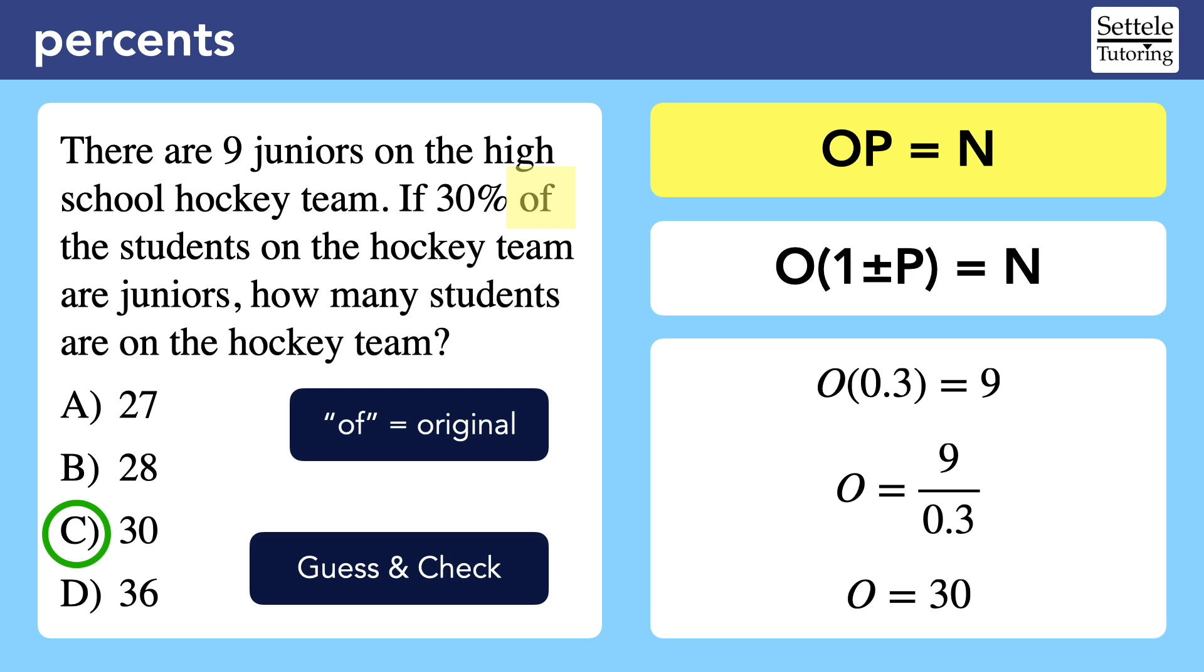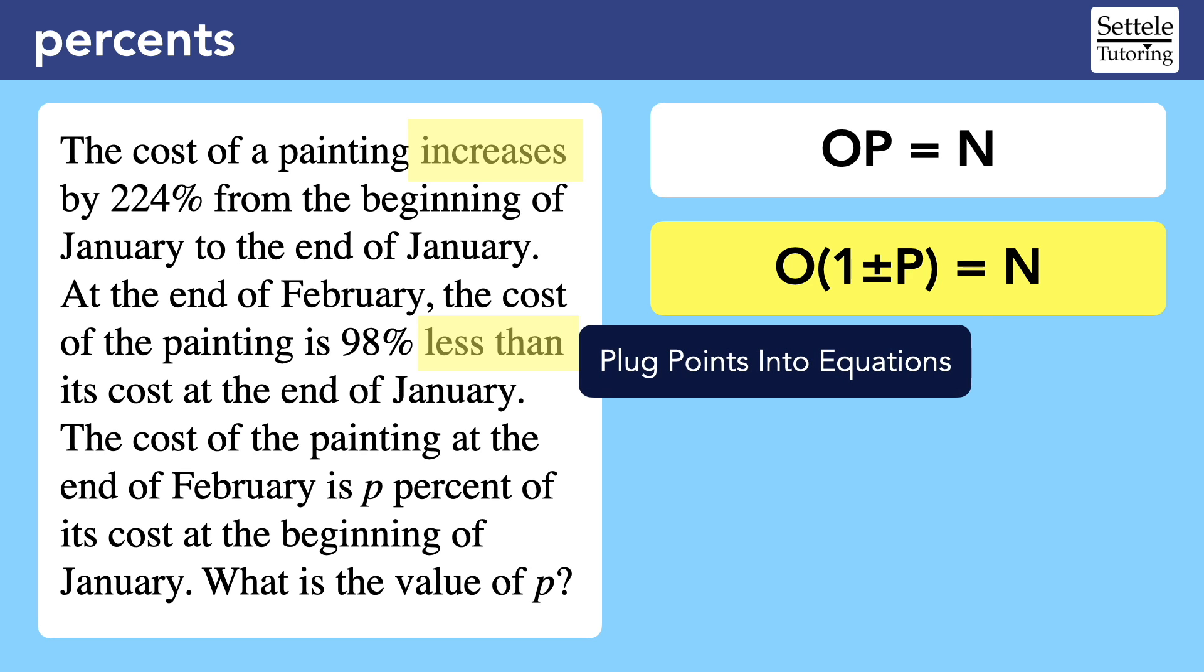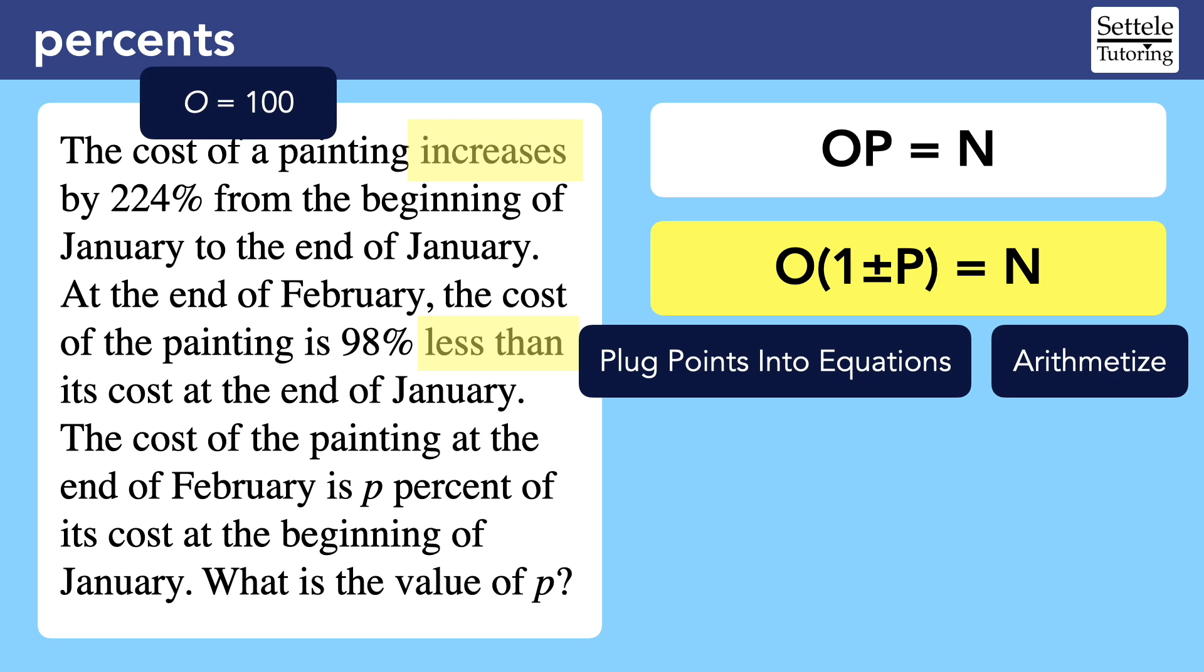The SAT can also make the percentages too confusing to work backwards. Let's look at a hard question that involves both twists. The cost of a painting increases by 224% from the beginning of January to the end of January. At the end of February, the cost of the painting is 98% less than its cost at the end of January. The cost of the painting at the end of February is P percent of its cost at the beginning of January. What is the value of P? We're actually going to need both OP formulas for this question, but we should start at the beginning. The story involves increases and decreases, so we'll use the plus or minus formula first. But I also noticed that this question seems to be missing something. My main math strategy is to plug points into equations. We can use the OP formula as our equation, but we're missing points to plug in. How much does this painting cost to start? Whenever we're asked about percentages without getting either the original or new values, we should arithmetize and make up a value that is easy to work with. I almost always choose 100 because it's very convenient for percentages.